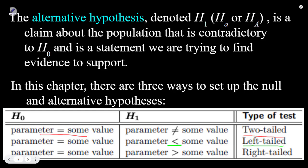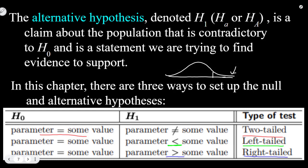Finally, we have a right-tailed test. Again, the null hypothesis says something is equal to a value, but the alternative hypothesis is that the values are actually greater than that. We call it a right-tailed test because in order to prove the null hypothesis false and the alternative hypothesis true, we would need to get values way over to the right of what would normally look like.